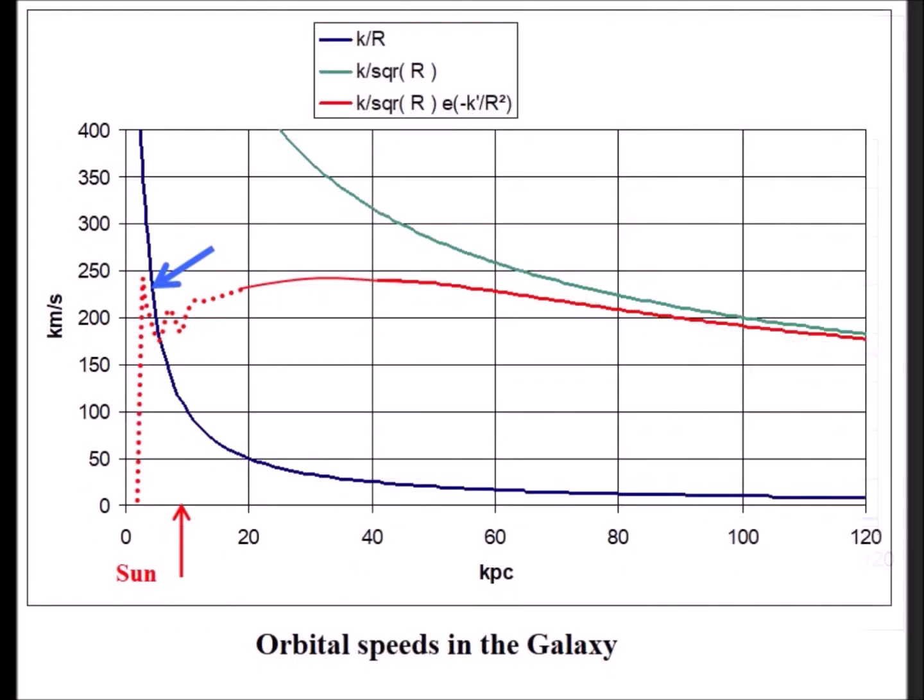In the same way, when all the angular momentum of the fluid particles is absorbed, the curve of the tangential velocities of the stars increases less quickly than the inverse of the distance.